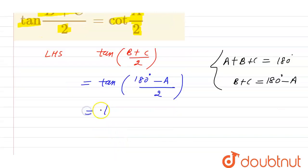So we will get tan of (180 degrees/2 - A/2). So this is equal to tan of 90 degrees minus A/2.